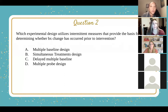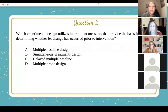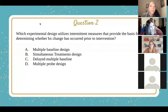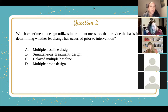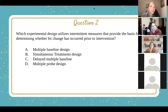So let's look at question two. Which experimental design utilizes intermittent measures that provide the basis for determining whether the behavior change has occurred prior to the intervention? Your options are A, multiple baseline design; B, simultaneous treatment design; C, delayed multiple baseline; and D, multiple probe design.